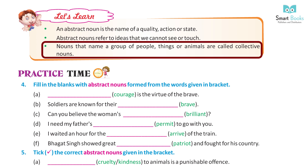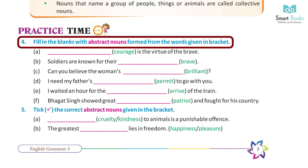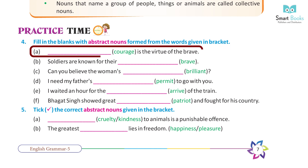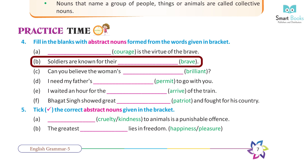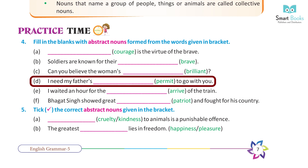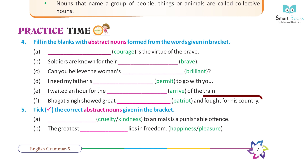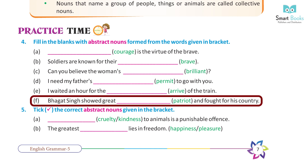Practice time. Question 4: Fill in the blanks with abstract nouns formed from the words given in the bracket. A) Courage is the virtue of the brave. B) Soldiers are known for their bravery. C) Can you believe the woman's brilliance? D) I need my father's permission to go with you. E) I waited an hour for the arrival of the train. F) Bhagat Singh showed great patriotism and fought for his country.